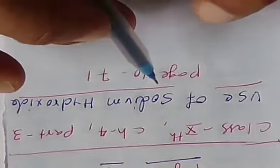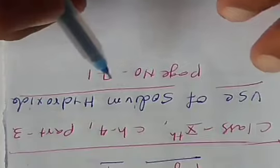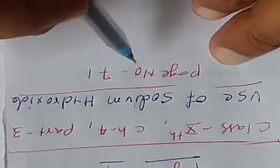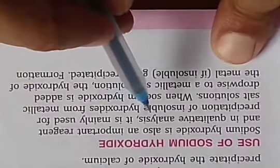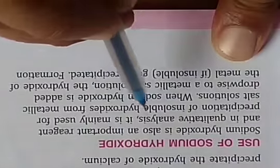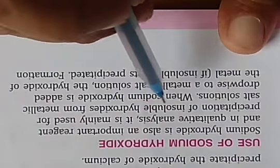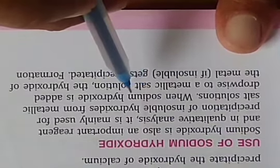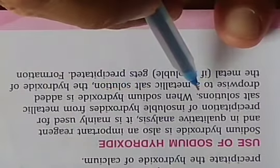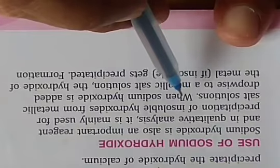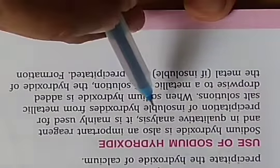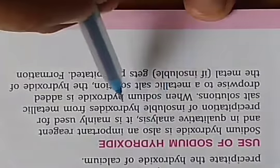Let's start a new topic: use of sodium hydroxide. This topic is from Chapter 4 of Class 10th Chemistry. Sodium hydroxide (NaOH) is an important reagent in qualitative analysis. It is mainly used for the precipitation of insoluble hydroxides from metallic salt solutions. When a metallic salt solution reacts with sodium hydroxide, it forms an insoluble hydroxide of the respective metal.